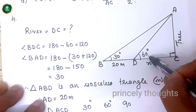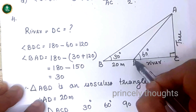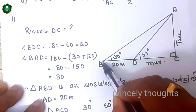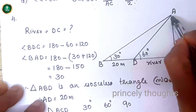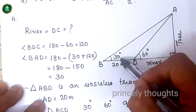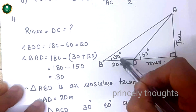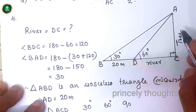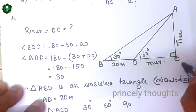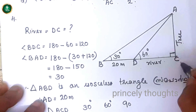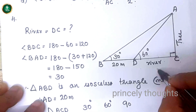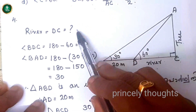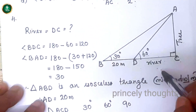The angle of elevation from the first position is 60 degrees. After stepping back 20 meters, the angle of elevation is 30 degrees. Let DC represent the width of the river. We set up two right triangles — triangle ACD with the 60-degree angle, and triangle BCD with the 30-degree angle.